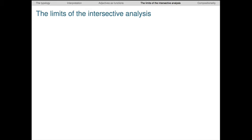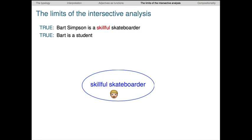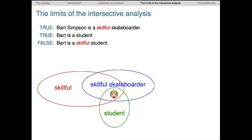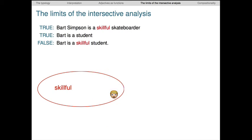Now assume that Bart Simpson is a skillful skateboarder. And assume also that he is a student, though not a skillful student. Now if skillful denotes a set, then it's clear that this amounts to saying that Bart is in the intersection of the skillful things and the skateboarders. Thus, of course, he has to be in the set skillful.